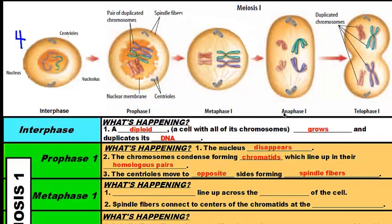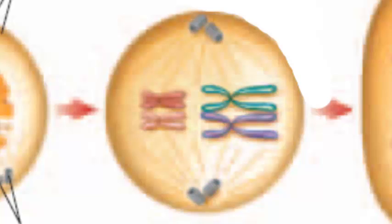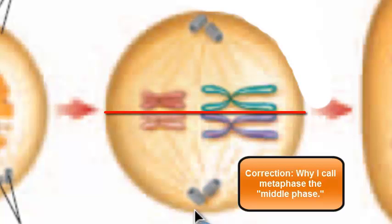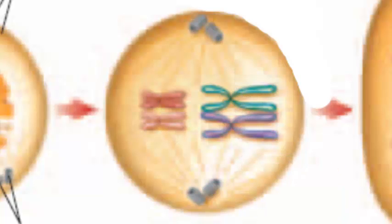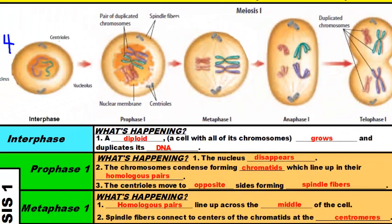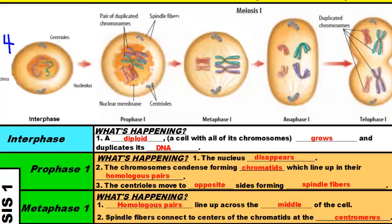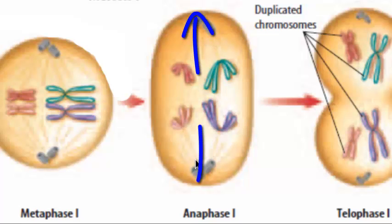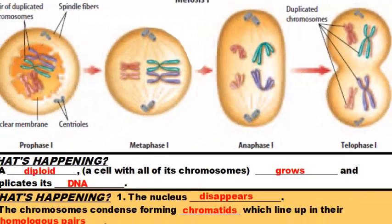What happens in prophase, metaphase, anaphase, and telophase in meiosis is similar to mitosis. In metaphase, the homologous pairs line up across the middle — that's why metaphase is called the middle phase. The spindle fibers connect and hook into the chromatid pairs at the centromeres. Then in anaphase, the spindle fibers shorten and pull on the chromatids, but they don't break the chromatid pairs apart — they break apart the homologous pairs. So dad's chromosomes get pulled to one side and mom's chromosomes get pulled to the opposite side.